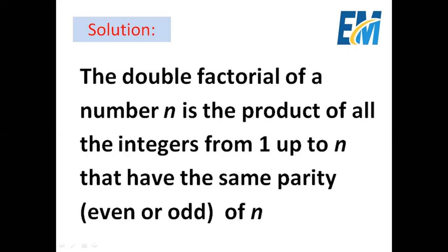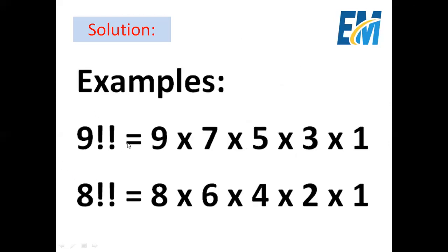So for example, if n is an odd number, then we multiply all the numbers from 1 up to n that are only odd numbers. Let's take two examples: double factorial of 9 and double factorial of 8. Since 9 is odd, double factorial of 9 is 9 × 7 × 5 × 3 × 1. Similarly, double factorial of 8 multiplies all even numbers: 8 × 6 × 4 × 2.